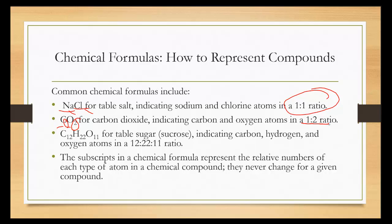And then table sugar, which is sucrose, C12H22O11. There's 12 carbons, 22 hydrogens, and 11 oxygens. Notice that there are always whole number ratios. There's never any fractions here. There are never any decimal points here.